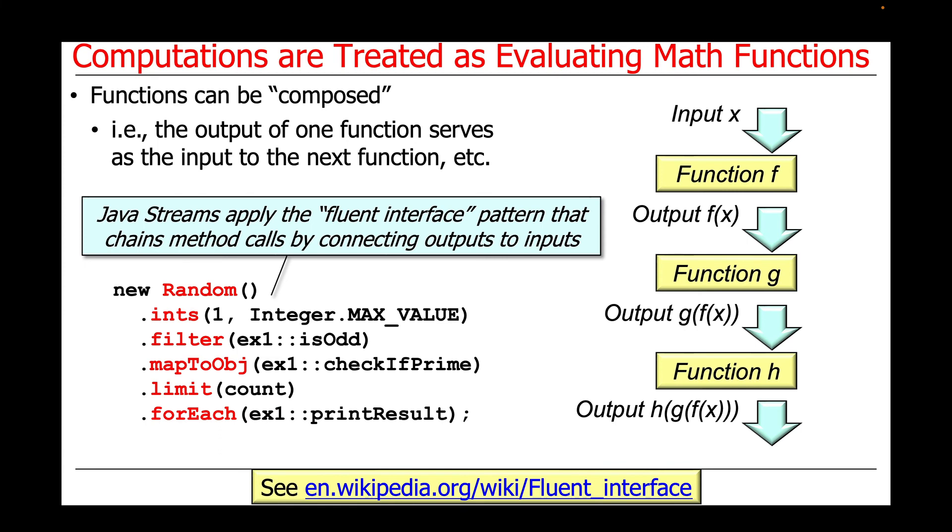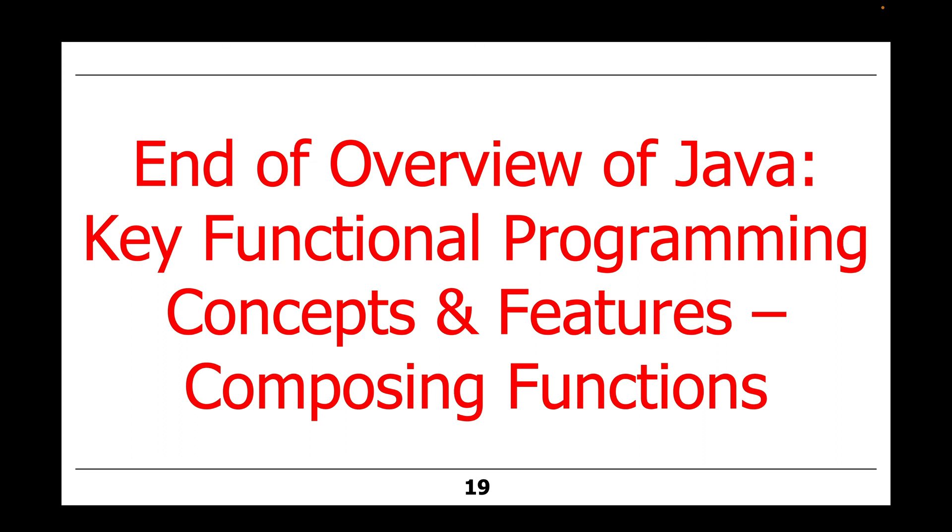Notice how Java streams can be used to apply the so-called fluent interface pattern that chains method calls together by connecting outputs of one function to the input of the next function, and so on, throughout the pipeline in the stream.